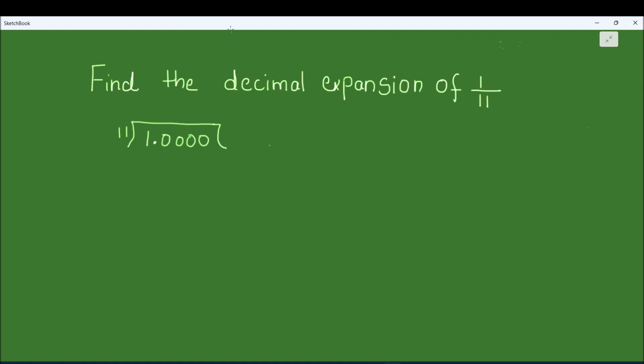Since 1 is smaller than 11, 11 times 0 is 0, and we get a remainder of 1. We drop down a 0, giving us 10. There is a decimal point in between, so we place the decimal point in our quotient as well. Now 10 is not divisible by 11.